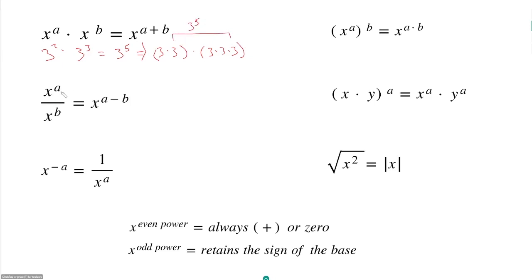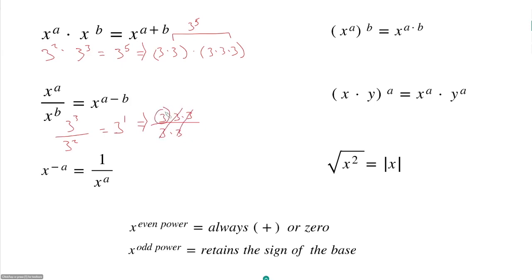Our next rule says X raised to the A over X raised to the B is equal to X raised to the A minus B. When we are dividing exponents with the same base, we subtract our powers. For example, 3 cubed over 3 squared should be equal to 3 to the 1st. This is logical because 3 cubed is 3 times 3 times 3 over 3 times 3 — two of our 3s on top and bottom cancel out, leaving us with just a single 3.